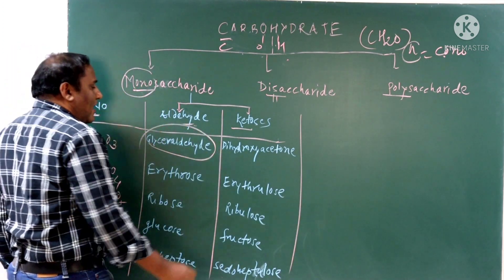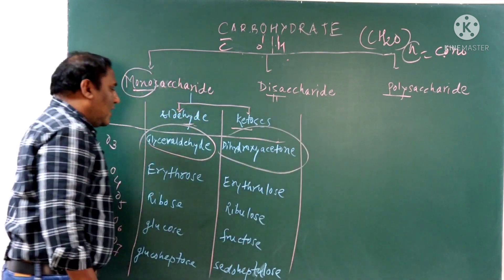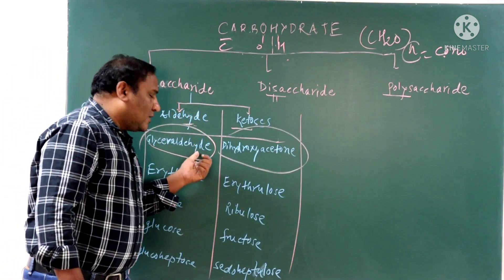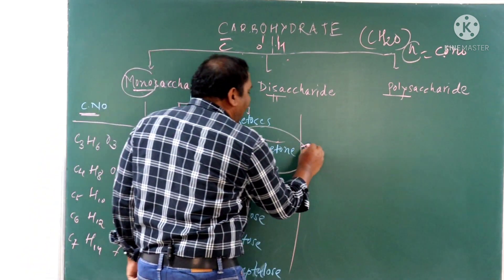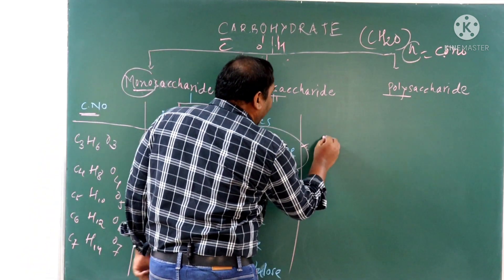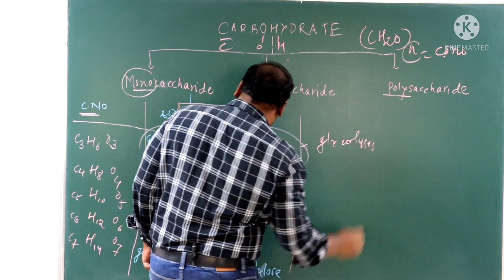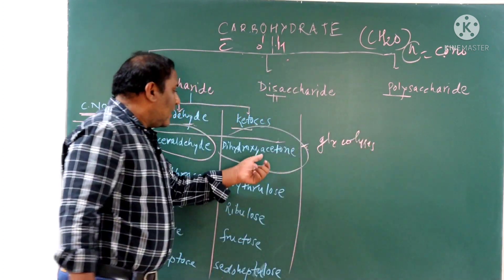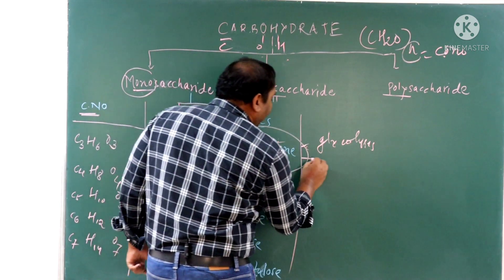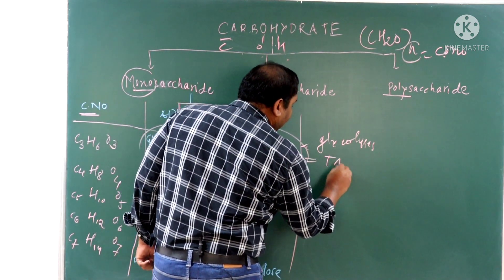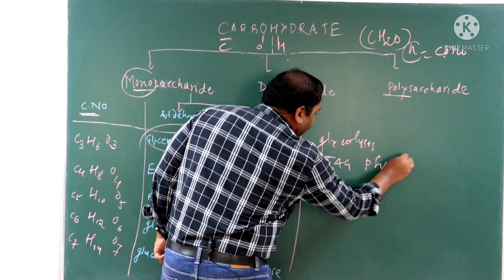In trioses, if the aldehyde functional group is present it is known as glyceraldehyde, and the ketone functional group form is known as dihydroxyacetone. Both glyceraldehyde and dihydroxyacetone are intermediate products of glycolysis. Dihydroxyacetone is also a precursor for the synthesis of triacylglycerol and phospholipids.